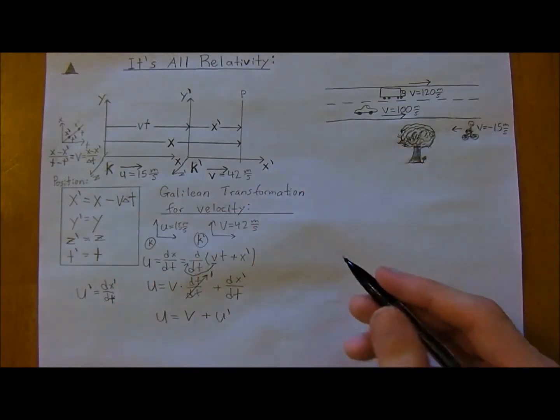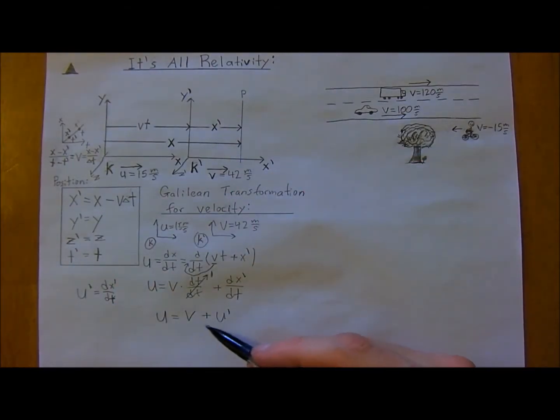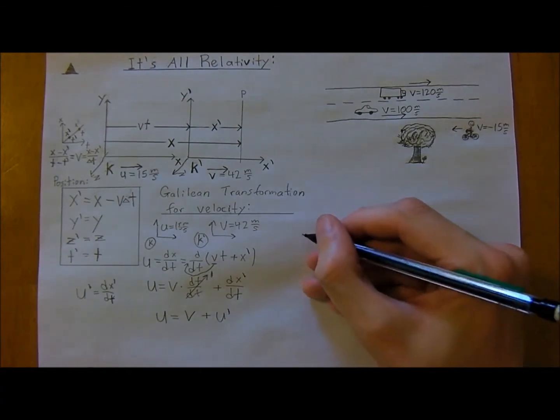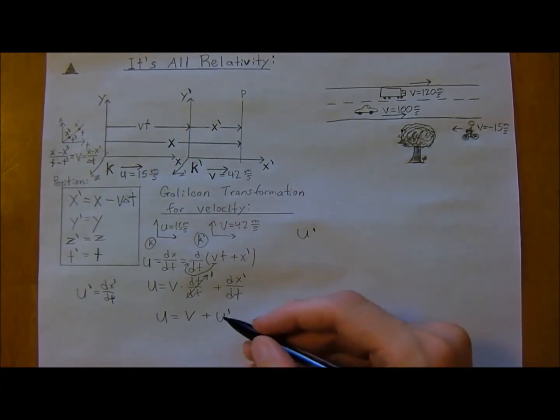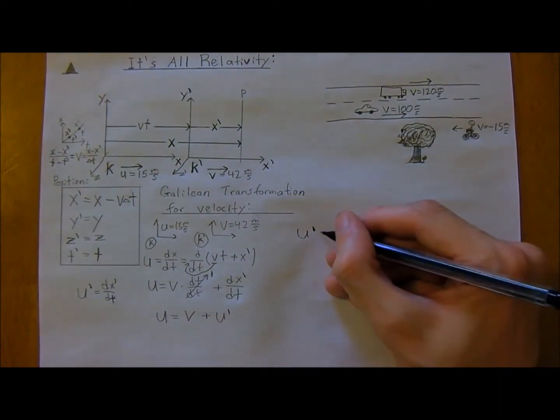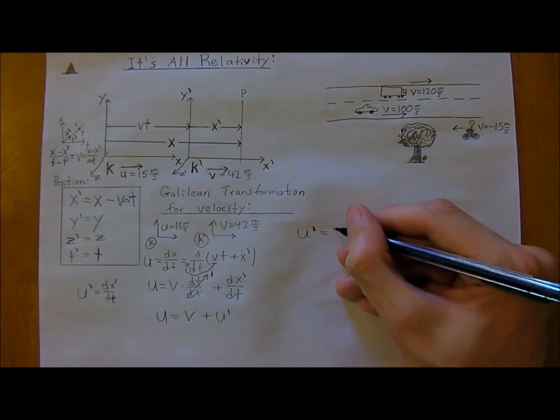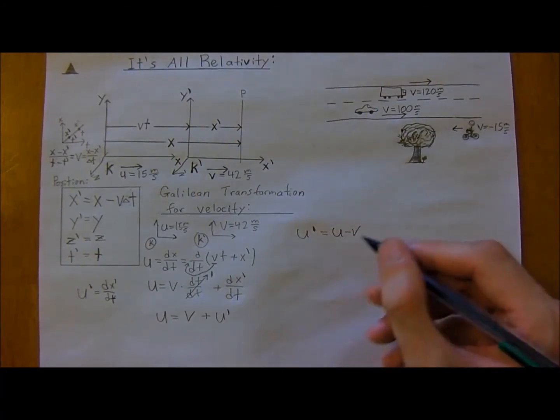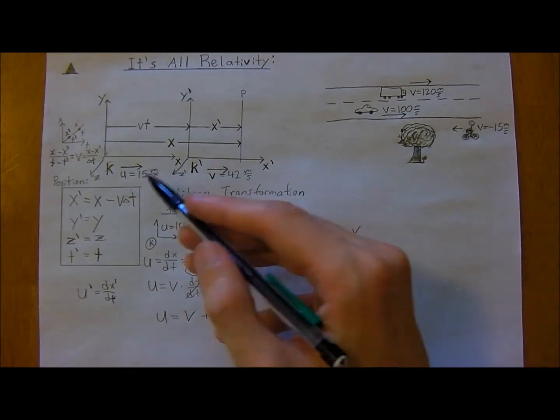And therefore, because u equals v plus u-naught, then you can just rearrange this equation, subtract v on the other side, or subtract v on both sides, and see that u-naught is equal to u minus v. And so we'll do a little example using these values here.